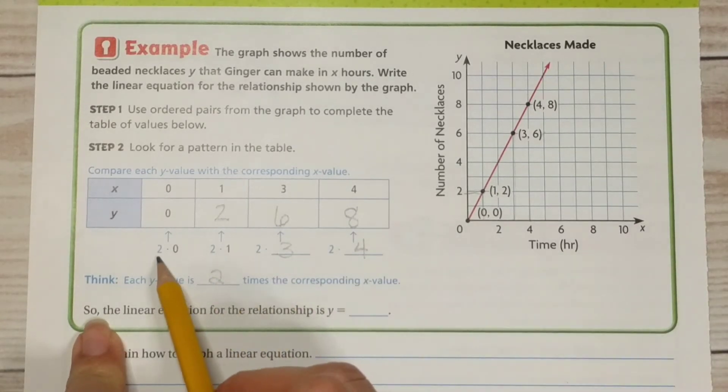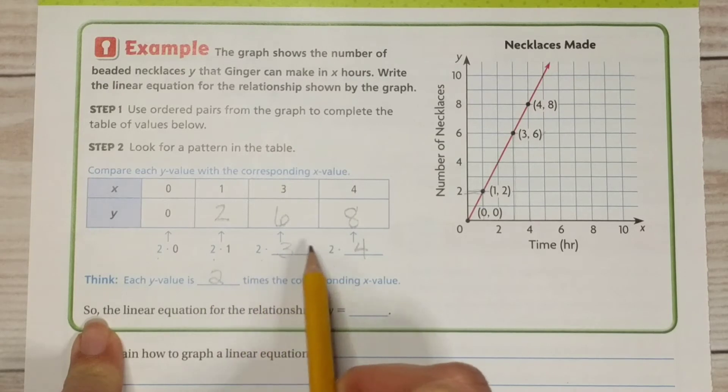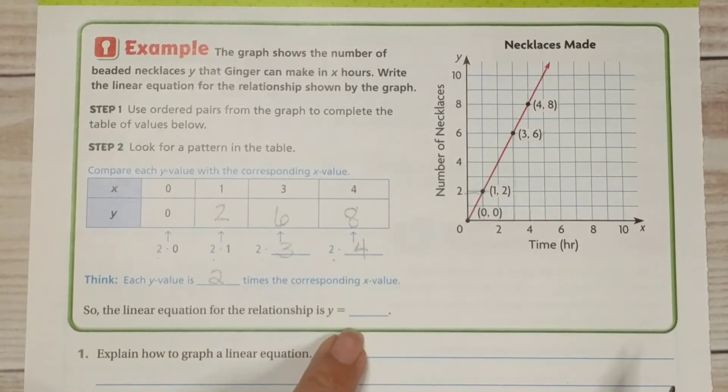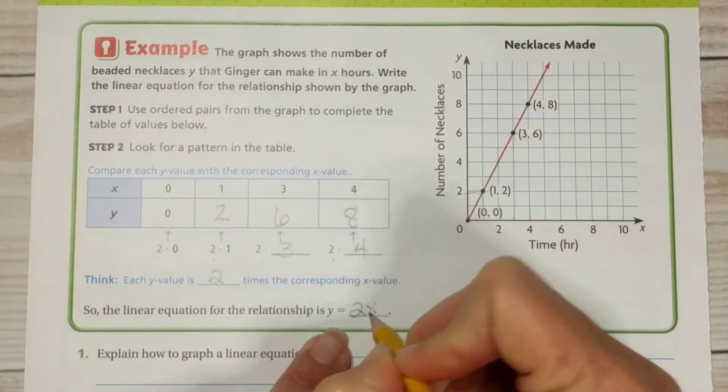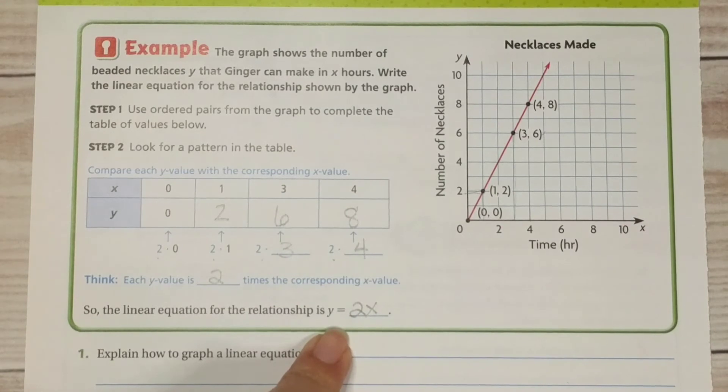Think each y value is 2 times the corresponding x value. We got that from here. 2, 2, 2, 2. So the linear equation for the relationship is y equals 2 times x or 2x.